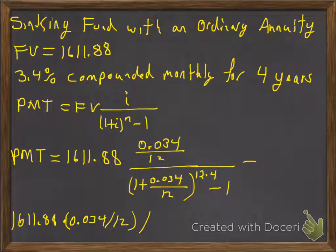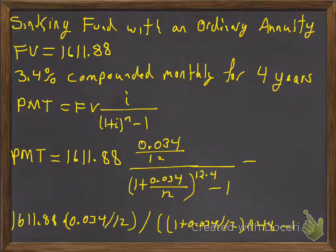the denominator has two terms, so we need to be more careful. Division bar, parentheses for the denominator, parentheses for this base: 1 plus 0.034 divided by 12, raised to the 48 power, minus 1, and then close parentheses for the denominator.